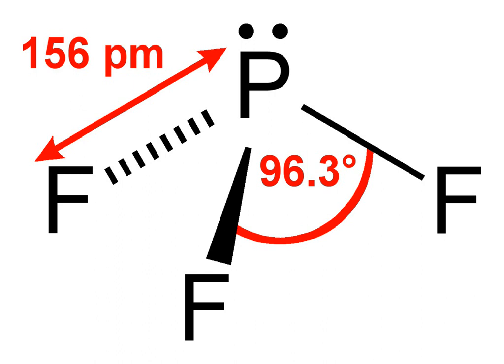Preparation: Phosphorus trifluoride is usually prepared from phosphorus trichloride via halogen exchange using various fluorides such as hydrogen fluoride, calcium fluoride, arsenic trifluoride, antimony trifluoride, or zinc fluoride.